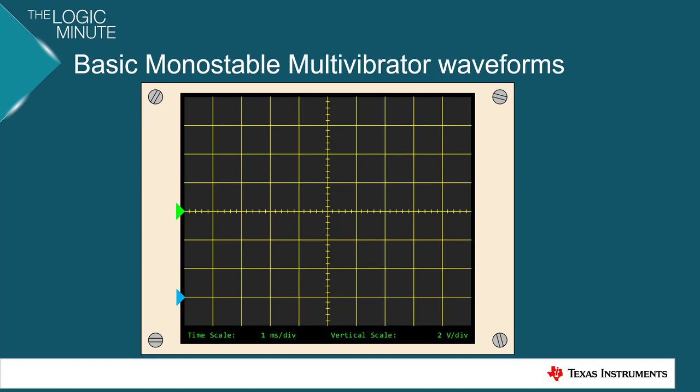The green will be our input and the blue will be our output. As you can see, both of our signals start out low. However, as we see the rising edge trigger from the green input, we will see an output pulse width of TW.